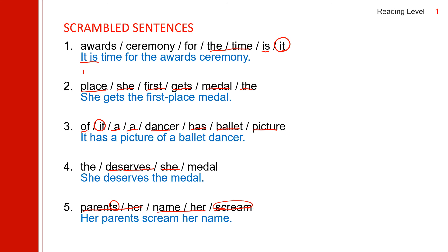Let's read the sentences one more time: It is time for the award ceremony. She gets the first place medal. It has a picture of a ballet dancer. She deserves the medal. Her parents scream her name. Okay friends, this is the conclusion of today's study. I will come back to you with another story as soon as possible. Until then, keep studying English and have a great day.